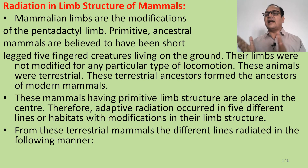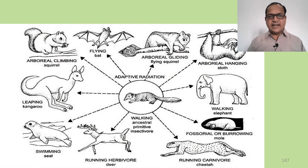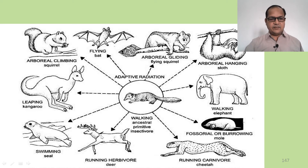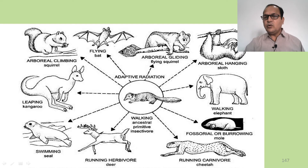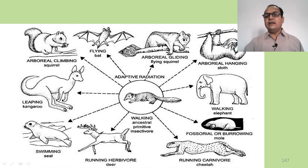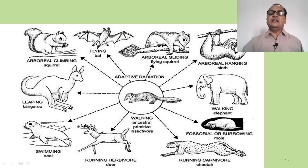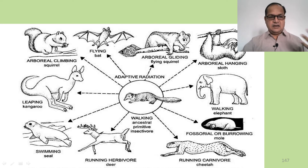From these terrestrial mammals, different lines radiated. In the diagram, the ancestral mammal is at the center and various radiations extend outward: running herbivores like deer, running carnivores like cheetah and lion, arboreal or cave-dwelling animals, burrowing animals like moles, walking animals like elephants, arboreal hanging animals like sloths, flying gliders like flying squirrels, aerial flyers like bats, arboreal climbers like squirrels, leaping animals like kangaroos, and aquatic swimmers like seals and whales.